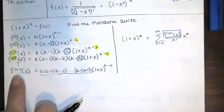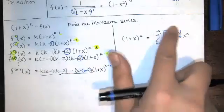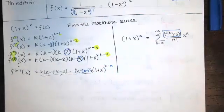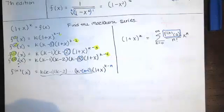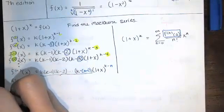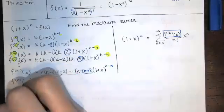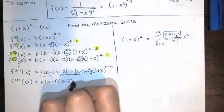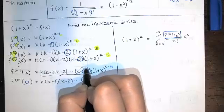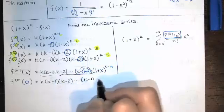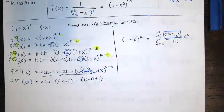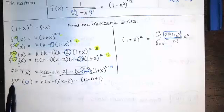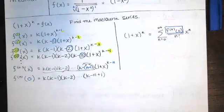Remember, you can't just plug this in — you have to evaluate that at 0. These are the values of those derivatives at x equals 0. To find the actual numbers in terms of n, we evaluate at x equals 0. We get k times k minus 1 times k minus 2, all the way down to k minus n plus 1, times (1 plus 0) to the k minus n. Since 1 raised to any power is 1, this is the expression for the nth derivative of this function at 0.